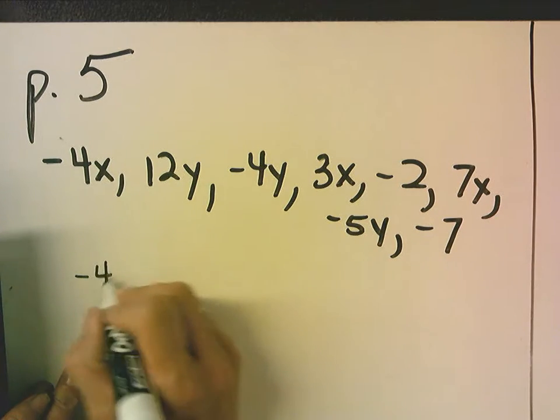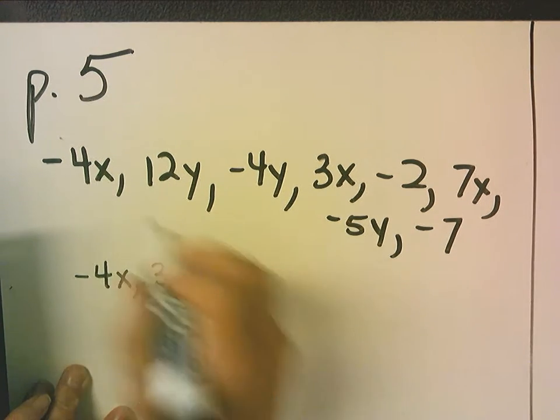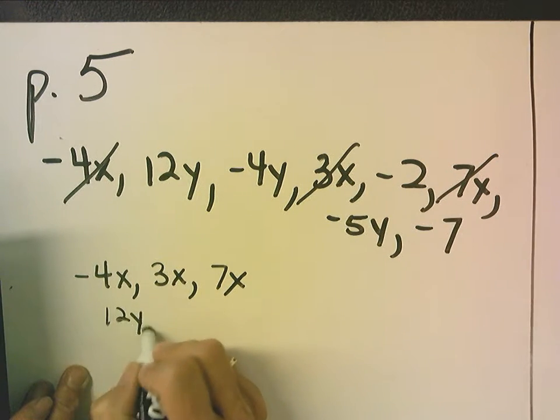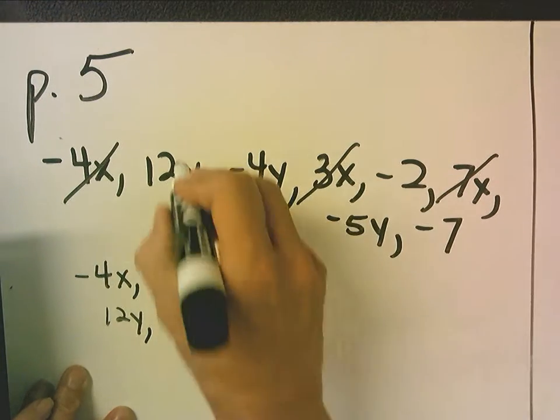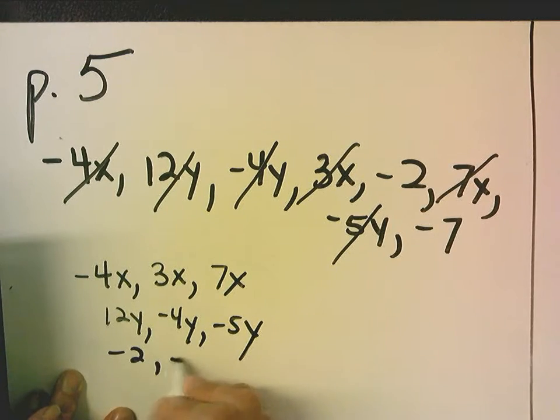So now my like terms are negative 4x, 3x, 7x, 12y, negative 4y, negative 5y. Notice I cross them out after I list them, because when you have a long list like this, it's easy to miss one.